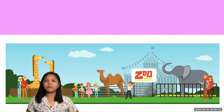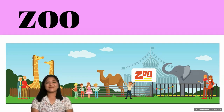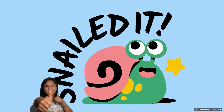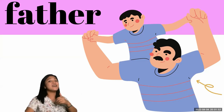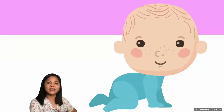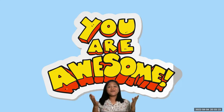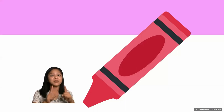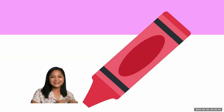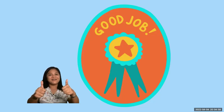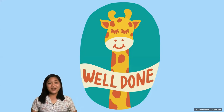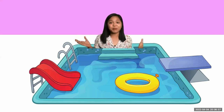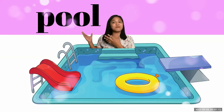How about our second picture? Can anyone tell me? It's the zoo! You nailed it! How about our third picture? You got it — it's a father. How about this one? It's a bear! You are awesome! Can you tell me what is this thing? A crayon! Good job! How about this giant thing? Ball! Wow! What is this place called? It's a pool! Keep it up!